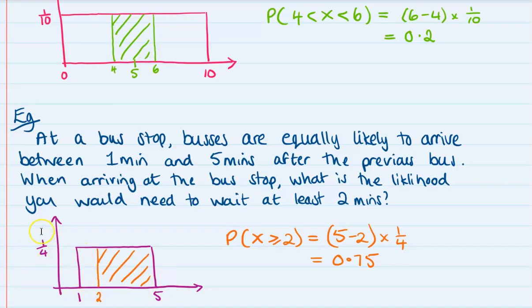So our height will be a quarter. And then the probability that x is greater than or equal to two, we've got this two upwards, so it'll be between two and five. So the base there is three. Three times a quarter makes 0.75.